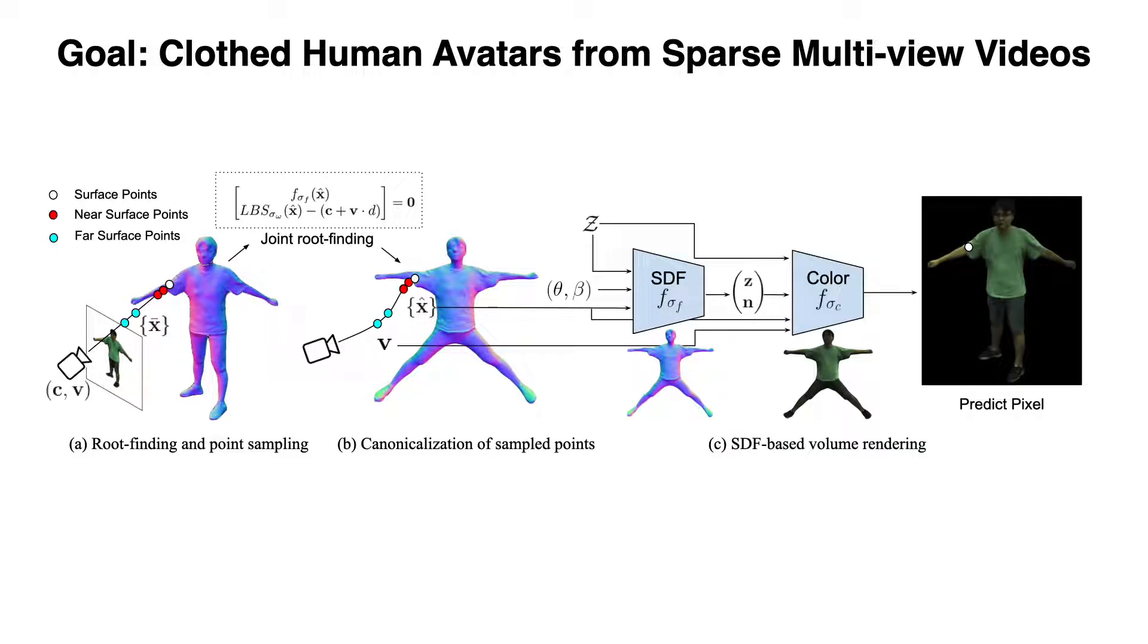With sampled points converted to canonical space, we leverage SDF-based volume rendering with the SDF network and a color network. All neural networks are defined in canonical space and can be trained end-to-end using only photometric loss.